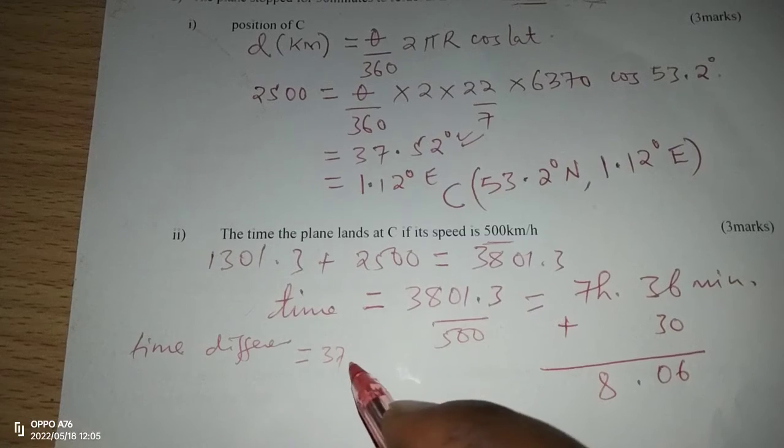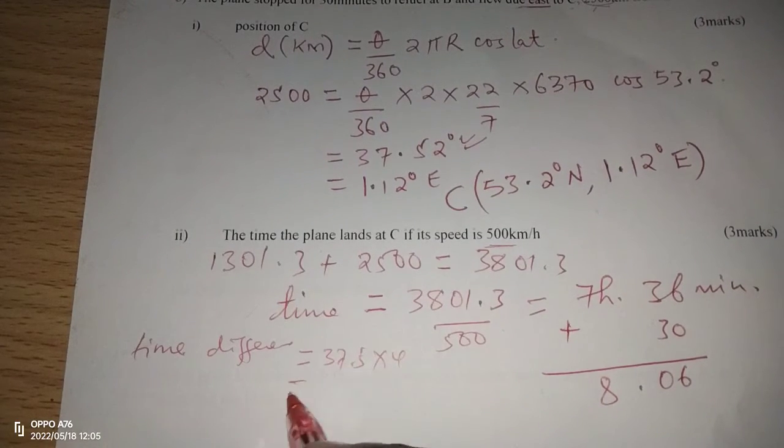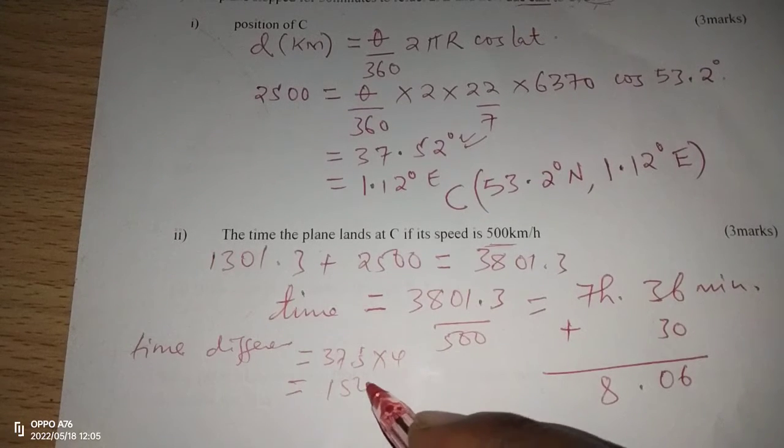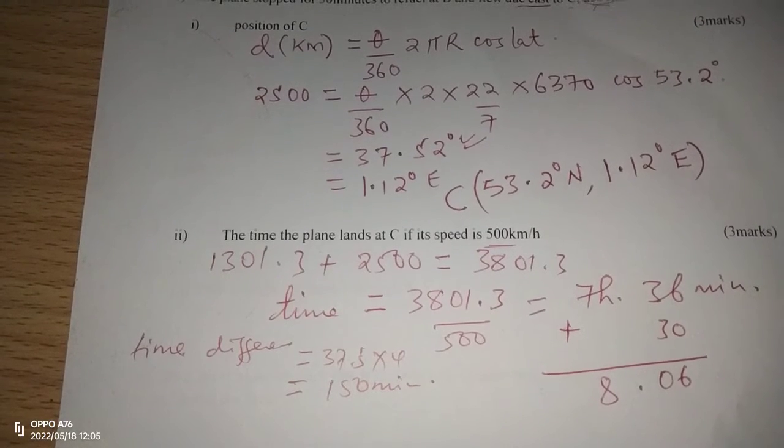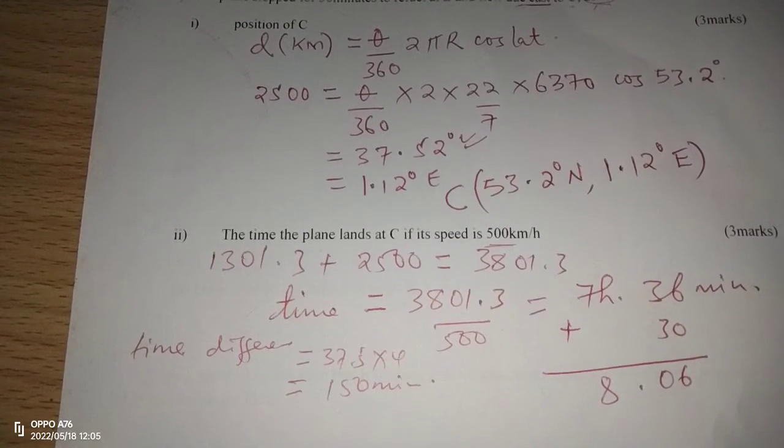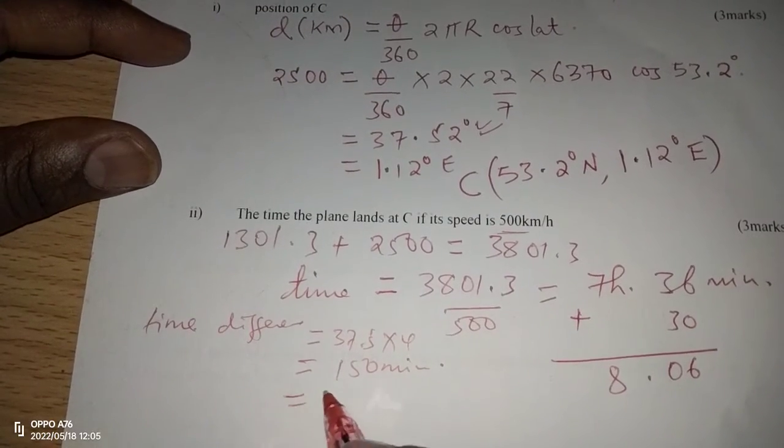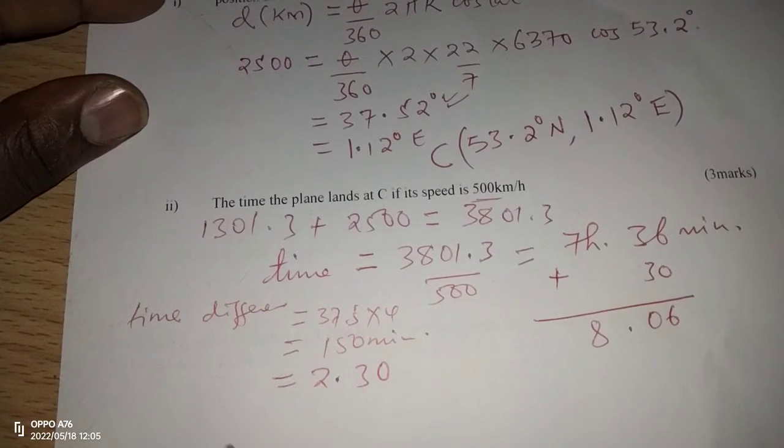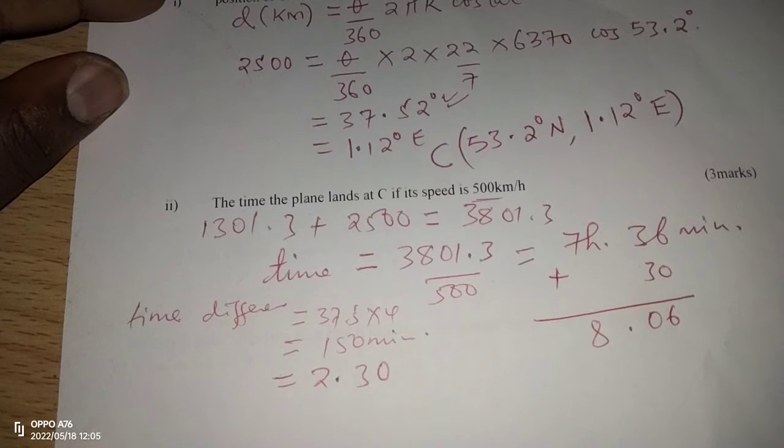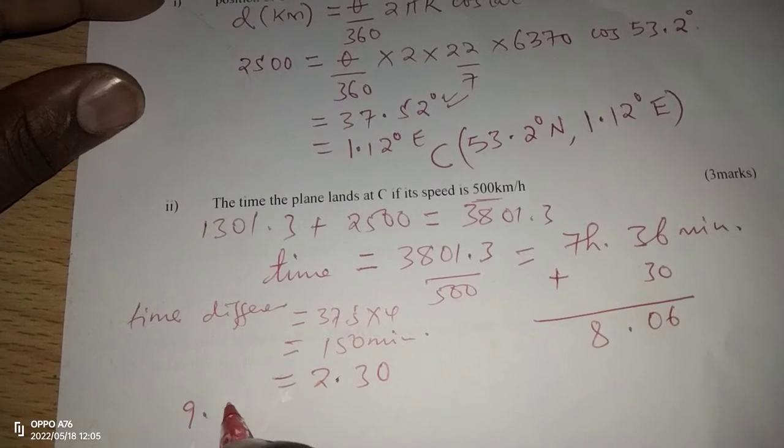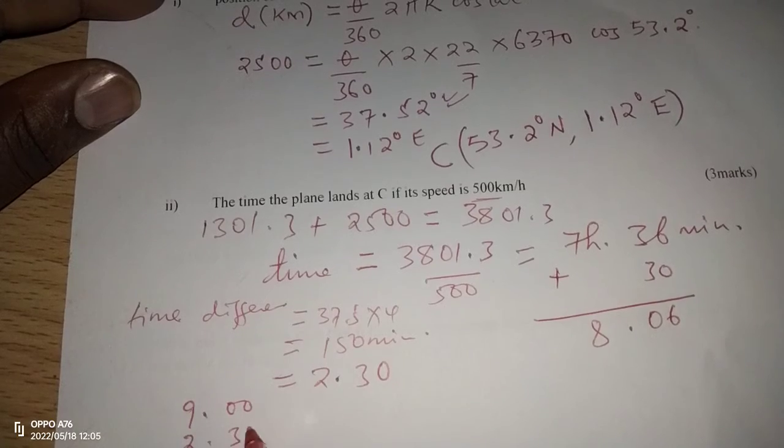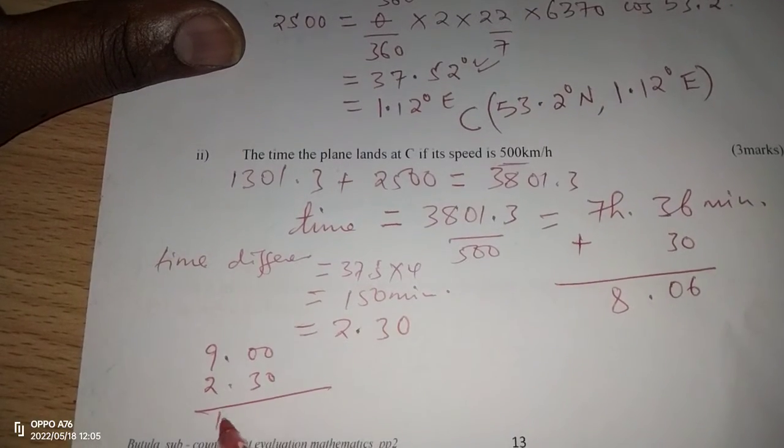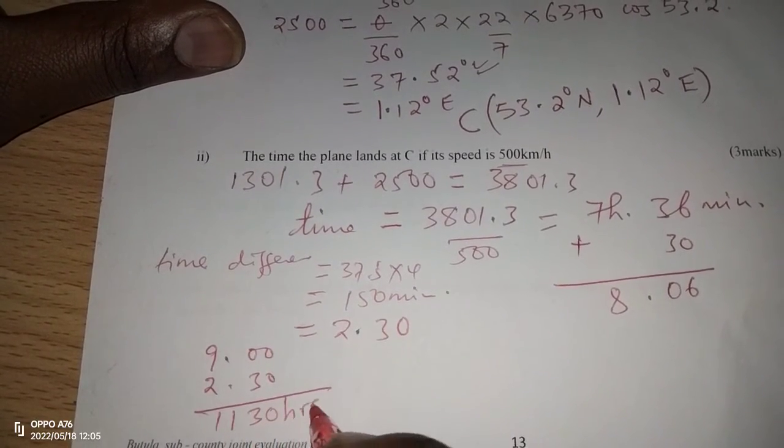A time difference of 37.2, and we multiply by 4, such that we'll get 37.2 by 4. And we are getting 150 minutes. 150 minutes, when we divide by 60, you realize that this is 2 and a half hours. So 2 and a half hours, which means 2 hours 30 minutes. Therefore, the original time at C, when the plane was starting, should be 9 exactly, plus 2 hours 30 minutes. That means when the plane was starting its journey, it was already 11:30 hours at C.